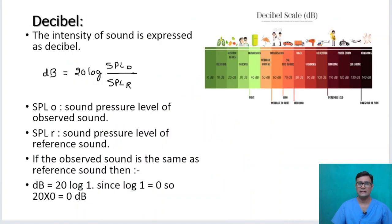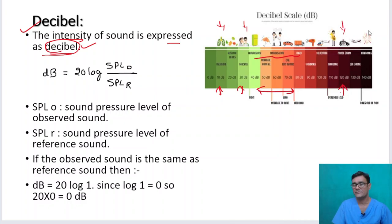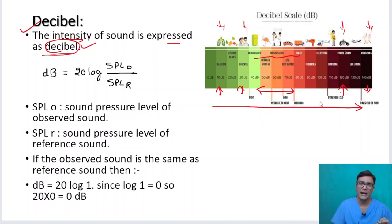The intensity of sound is expressed in decibels. A normal breath sound is 10 dB, a whisper is 30 dB, conversation is 50–70 dB, a police siren is 120 dB, and a loud explosion is 140 dB. As the intensity of sound increases, the decibel value also increases. The formula is: dB = 20 log (SPL_O / SPL_R), where SPL_O is the sound pressure level of the observed sound and SPL_R is the sound pressure level of the reference sound.